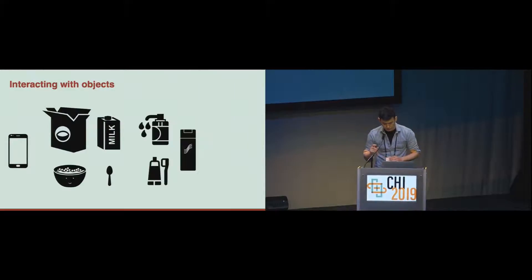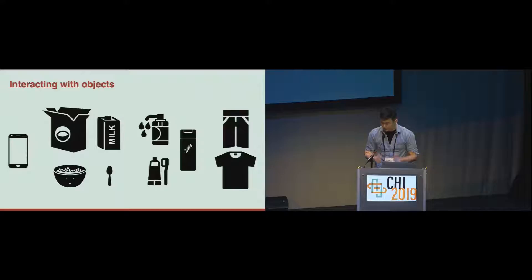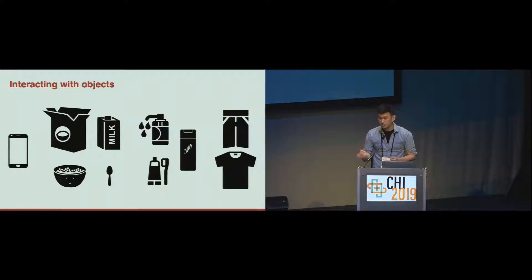Every day, people interact with so many objects. For example, in the morning, a person may be interacting with objects such as smartphone, cereal box, milk, shampoo, and clothes — which may be the ones you interacted with this morning. To make necessary interactions with these objects, it is essential to recognize the object first. And depending on the level of vision a person has, the way of recognizing objects would be different, because the visual features of an object contain a lot of information for recognition.